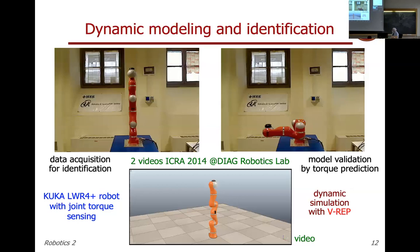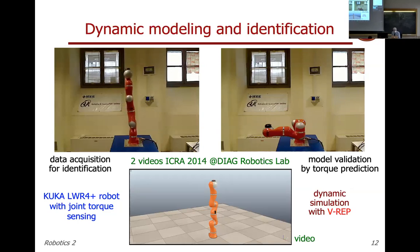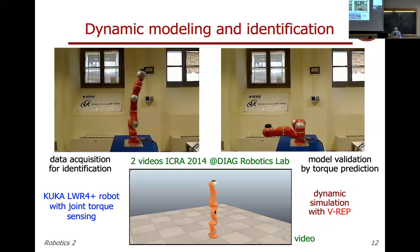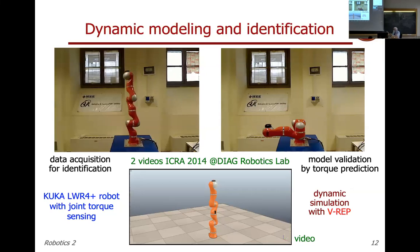These videos include two real experiments and one simulation, taken in our lab using the KUKA lightweight robot. Here we are acquiring data to identify the coefficients of the dynamic model. We first derive the model in symbolic form — much more complex than a single or two-mass system, but there is a systematic approach. Once you have this, you reorganize the model and must put numbers in place of the masses, inertias, and so on.